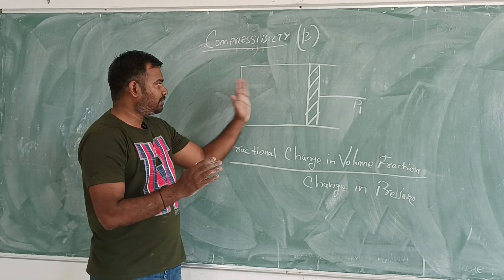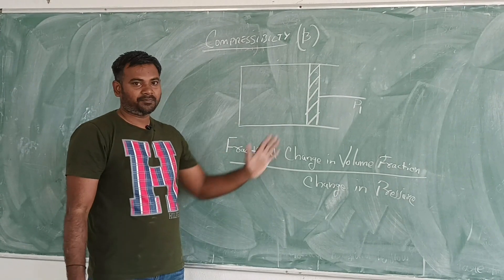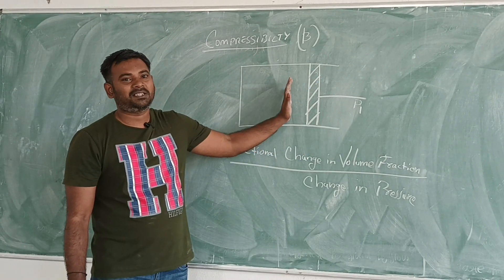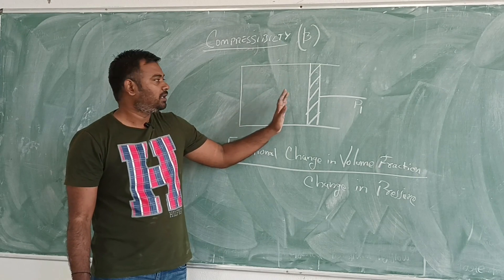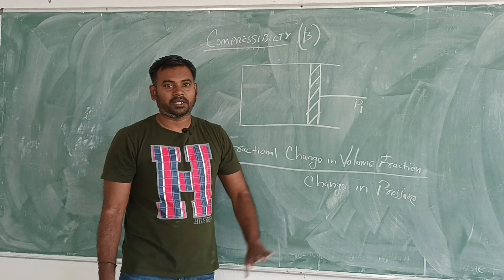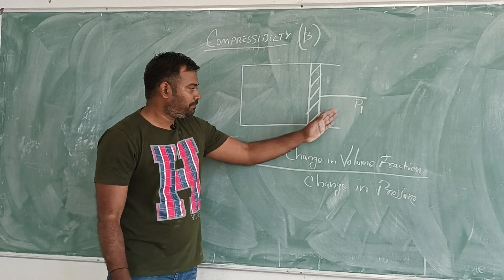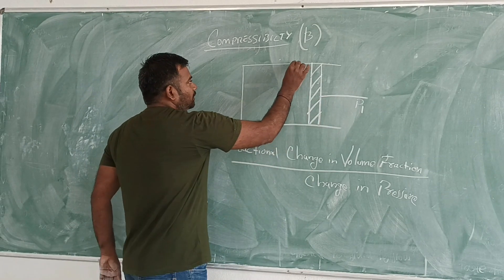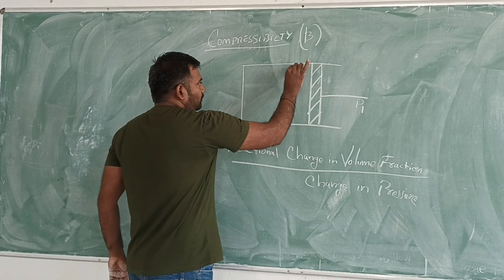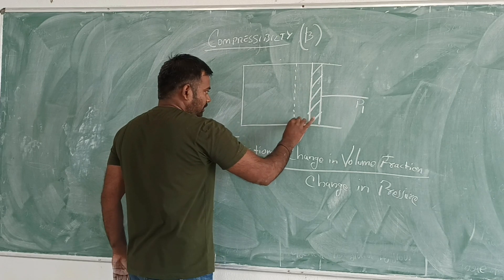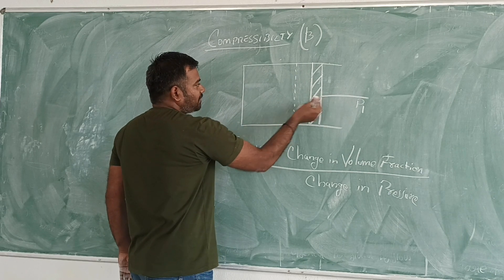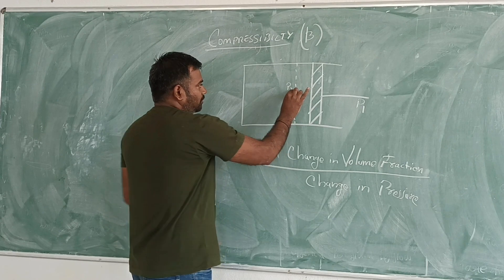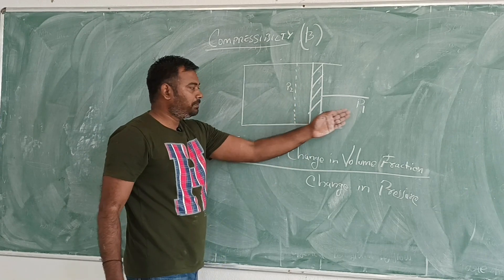Now imagine a cylinder with a piston inside it. I apply pressure P1 on the piston, and the piston will move to the left. As the piston moves, pressure increases to P2, so P2 is greater than P1.